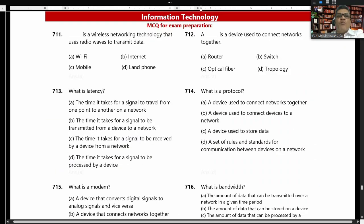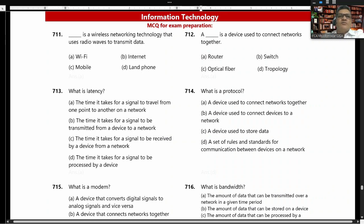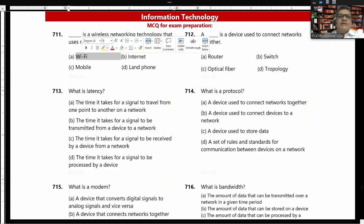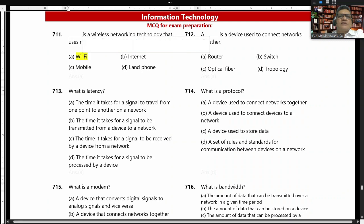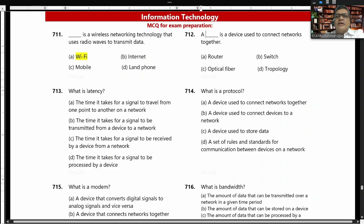Wi-Fi is a wireless networking technology that uses radio waves to transmit data. A router is a device used to connect networks together.